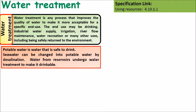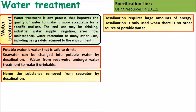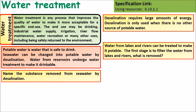Potable water is water that's safe to drink. Seawater can be changed into potable water by using desalination. Water from reservoirs undergoes water treatment to make it drinkable. Desalination requires a large amount of energy, so it is only used when there are no other sources of potable water. Water from lakes and rivers can also be treated to make it potable.